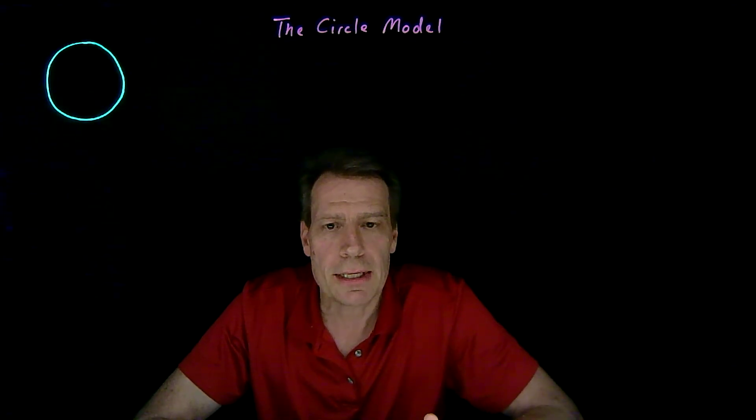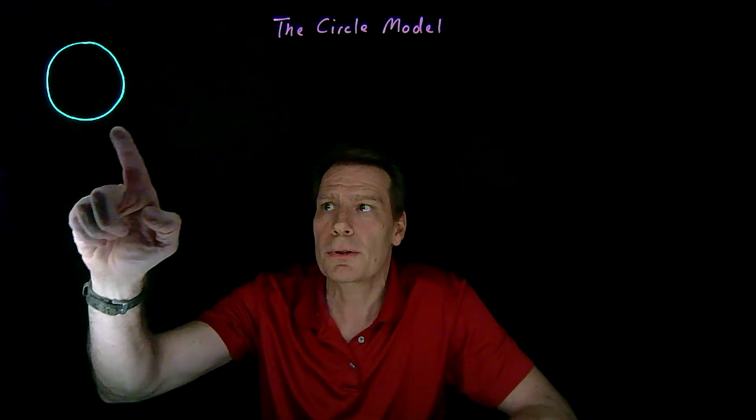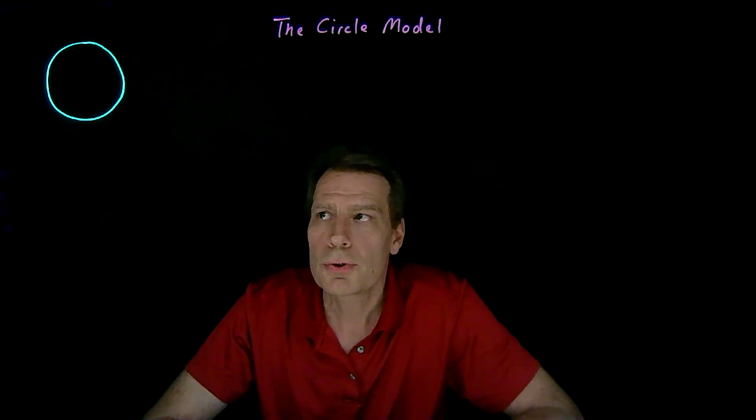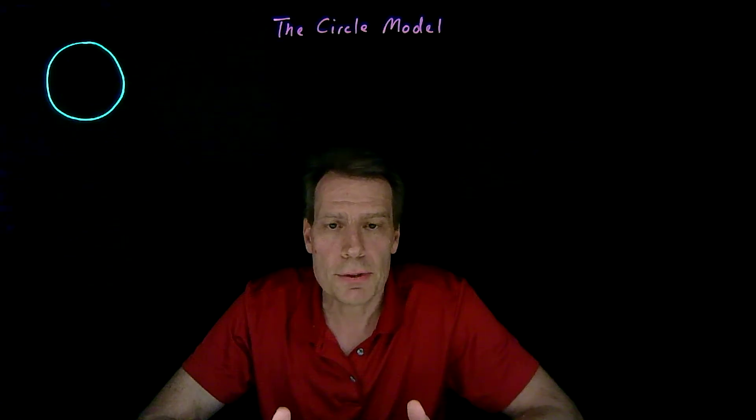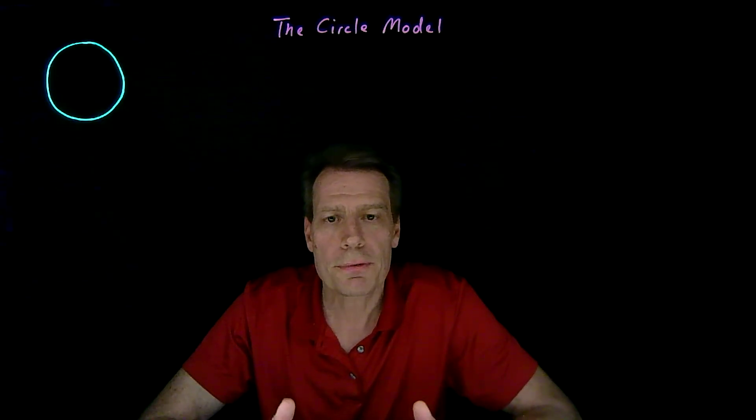Just like in the Hotelling model, we'll assume that consumers are uniformly distributed in terms of their ideal points around that circle. So at each point in the circle, there's an equal number of consumers.